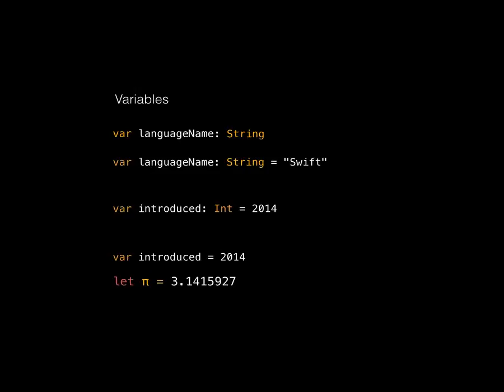Because Swift supports full Unicode, you can actually use Unicode characters like pi and emoticons as variable names. Nobody has really explained how you're supposed to type that in during development, but it is possible to use any Unicode character as a variable name — and if you watch any of Apple's demos, they can't wait to roll out the little laughing dog emoji as a variable.